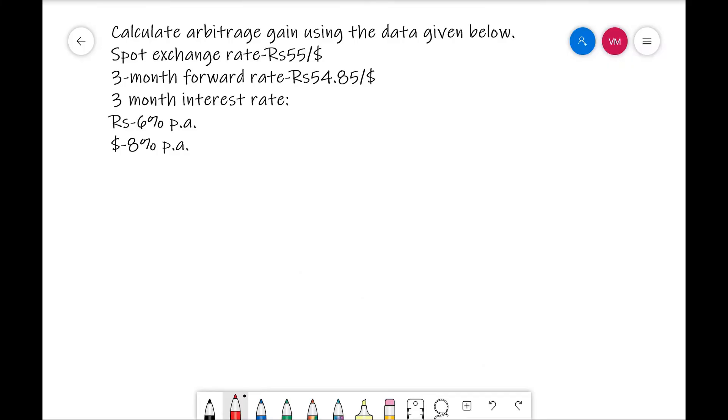Let us take an example by taking one solved problem. In the problem, they have given the data like this: spot exchange rate rupees 55 per dollar. That means if you purchase today, it is 55 rupees. Three months forward rate, if you purchase after three months, it is 54.85. That means it is forward discount. They have given interest rate for rupees 6% and for dollar it is 8%. We need to check is there any arbitrage possibility.